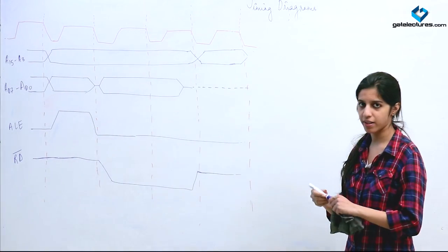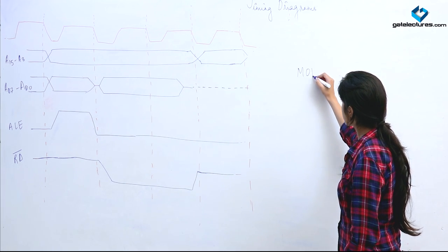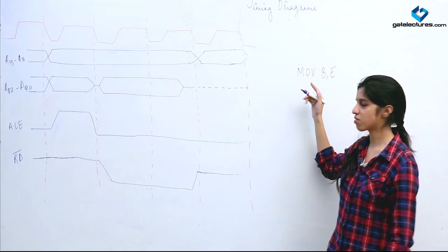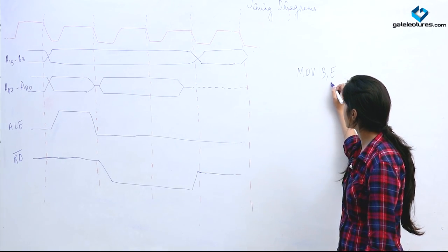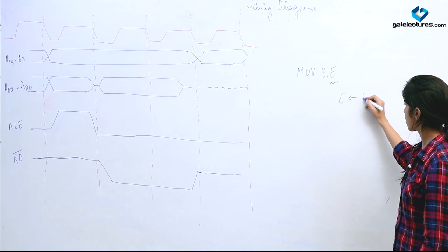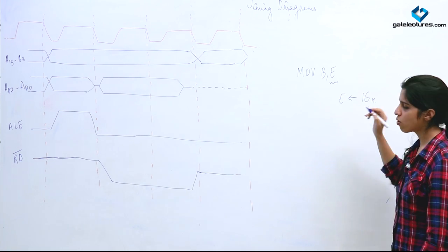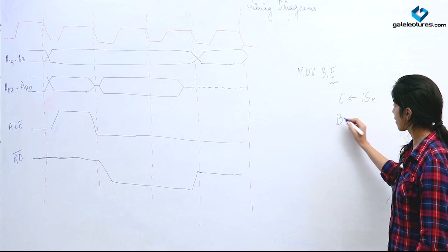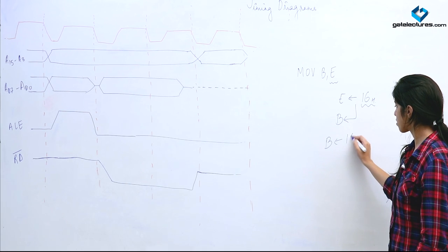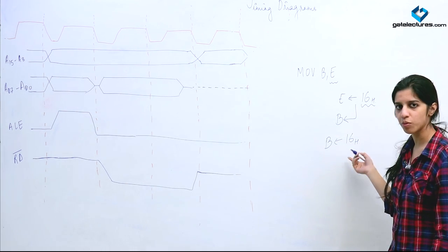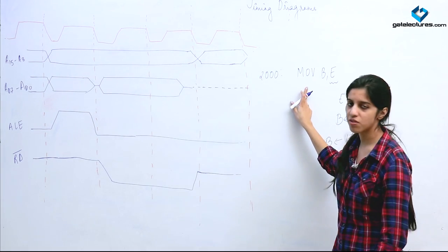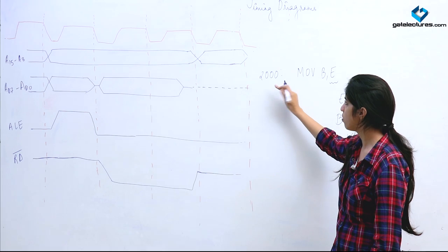Now we look at the timing diagram for another instruction: MOV B, E. This is a register addressing mode instruction. Whatever contents register E holds — suppose E has 16H stored — after execution, the contents of E are moved to B. So after this instruction, register B will contain 16H. Suppose the starting location for this instruction is 2000H.